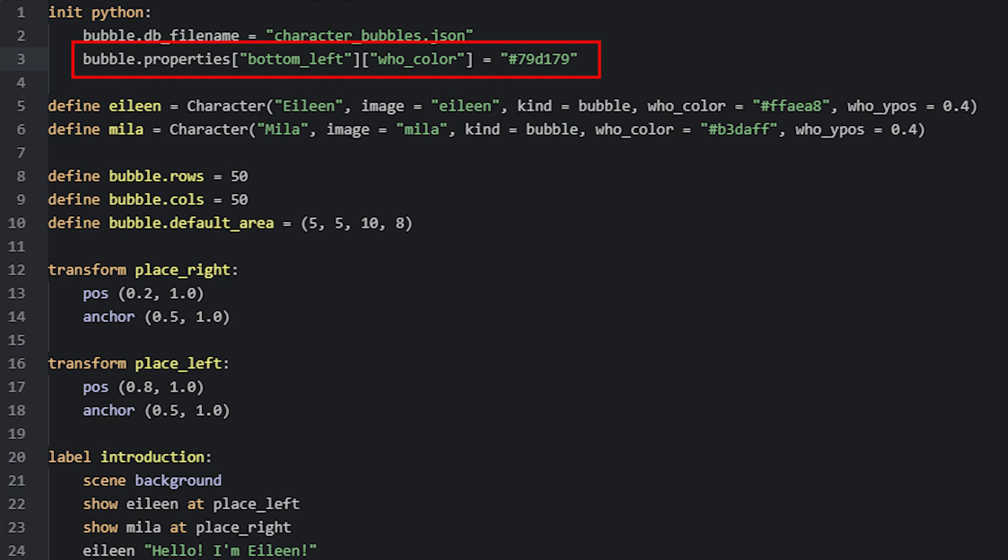To do that, you would write inside of an init python block, bubble.properties, and then two square brackets, and inside two quotation marks, you would add bottom_left. Then to adjust for example the who color, you would write another two brackets, and then who_color. Then you would simply say is equal to, and then the new color you want. And for this example, I'll set it to green.